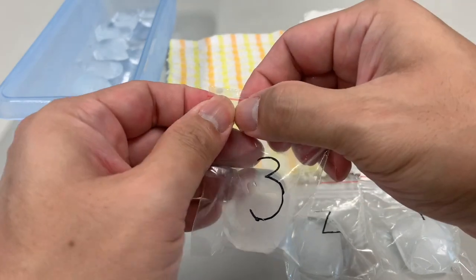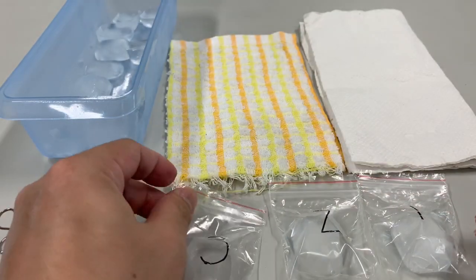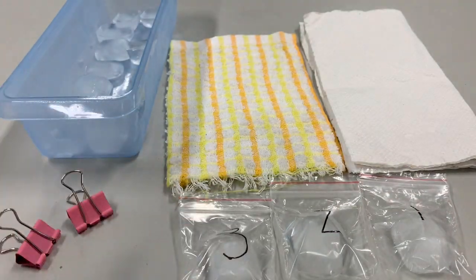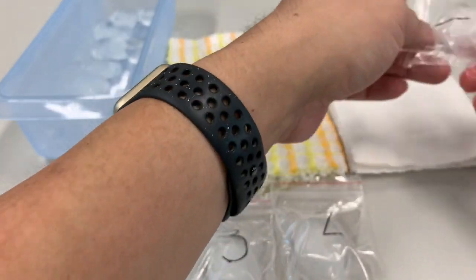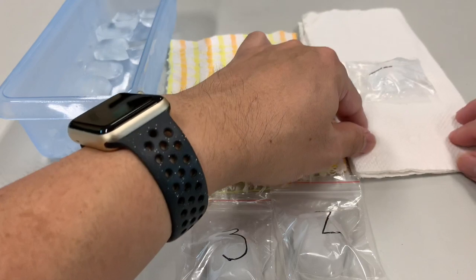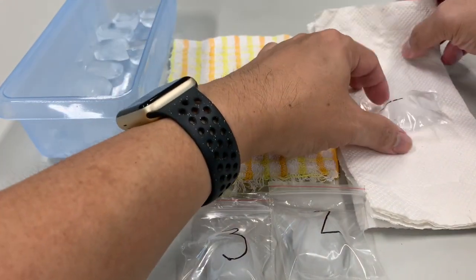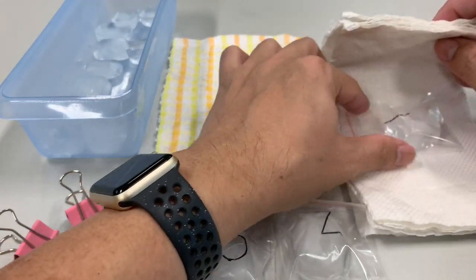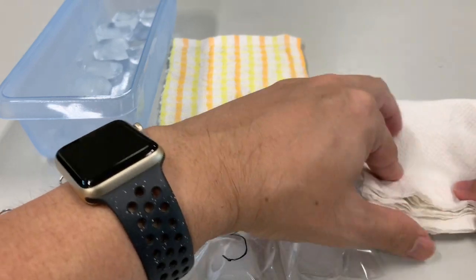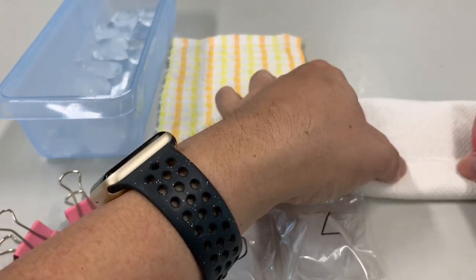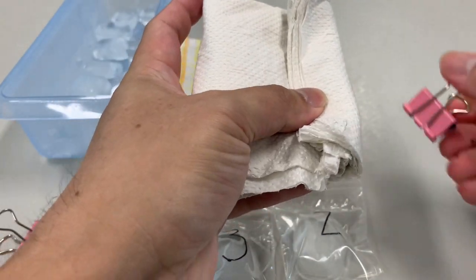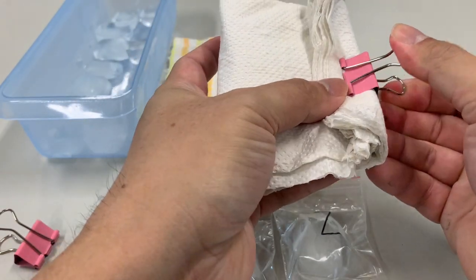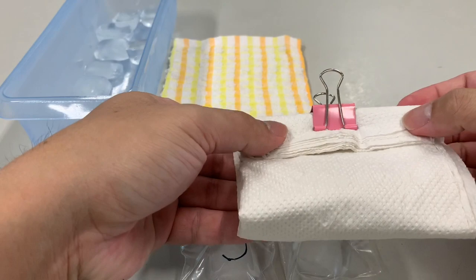There we have three ice cubes. So we're gonna put number one into the middle of the paper towel and fold the paper towel so it will wrap around the ice cube.